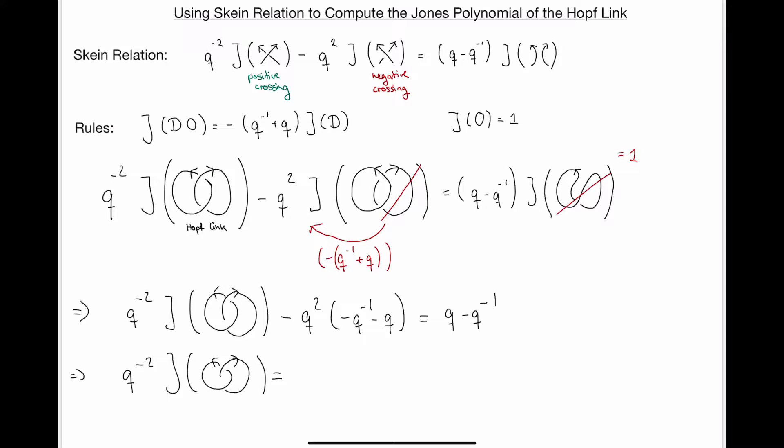Well, this minus becomes plus and then we have q square times minus q inverse. So overall, this gives us minus q to the three. And then we have plus q minus q inverse. So here we simplify q with minus q and we'll get that this is minus q to the three minus q inverse.